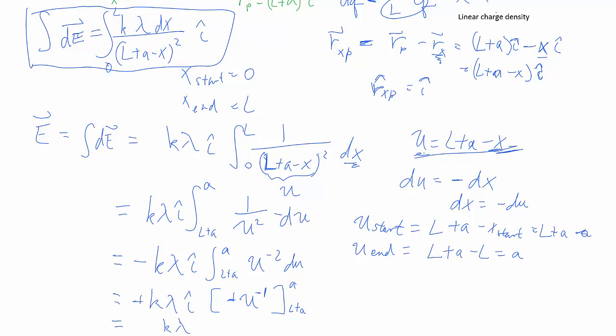We can actually take the negatives out and cancel. So that's k lambda i-hat, one over a minus one over L plus a.